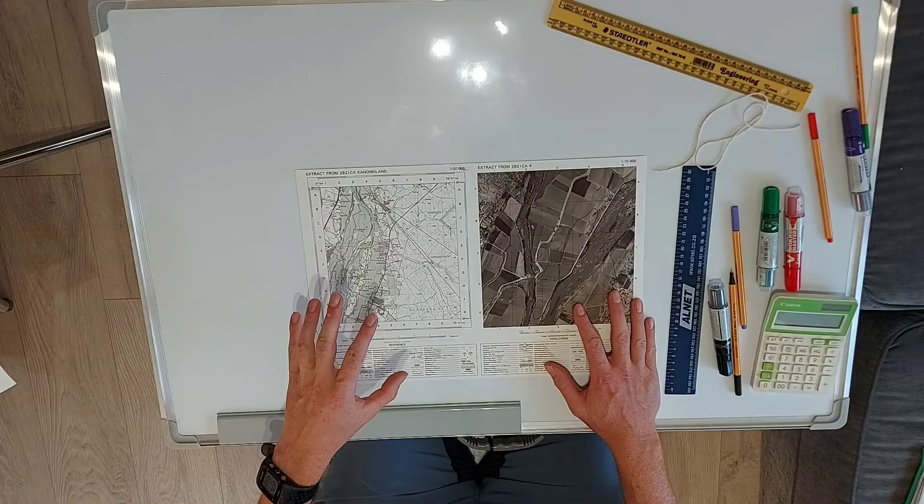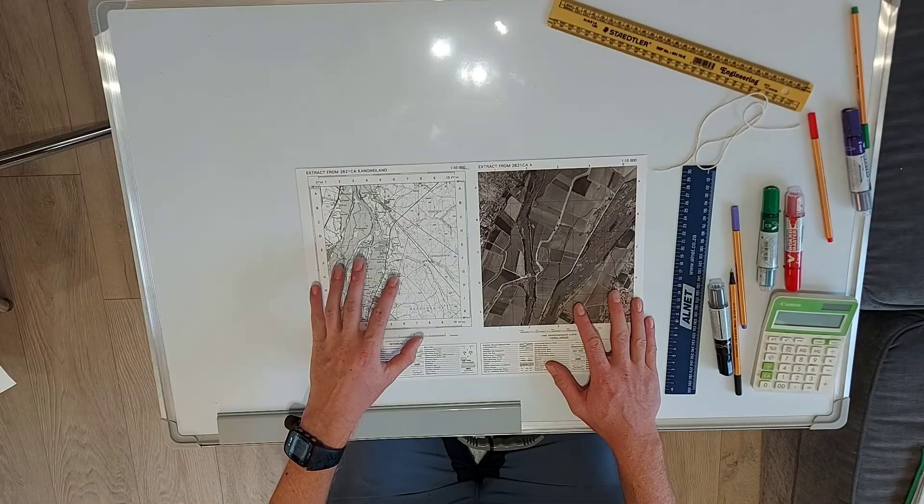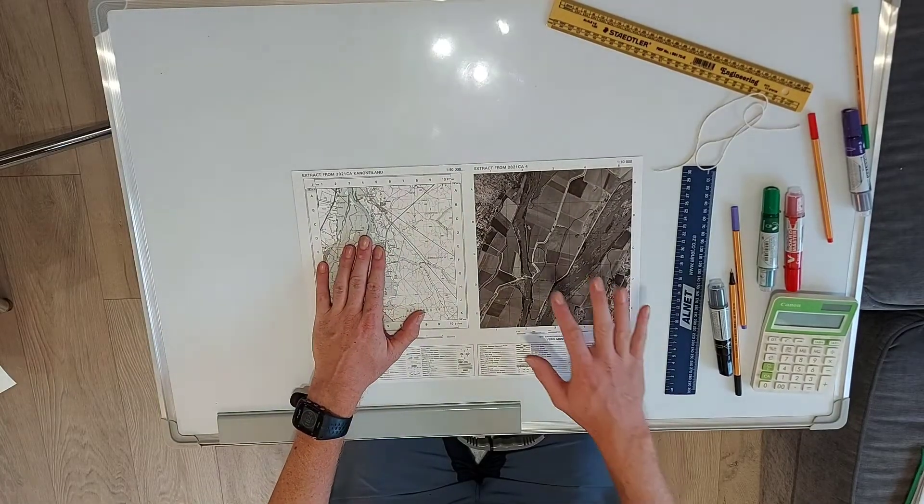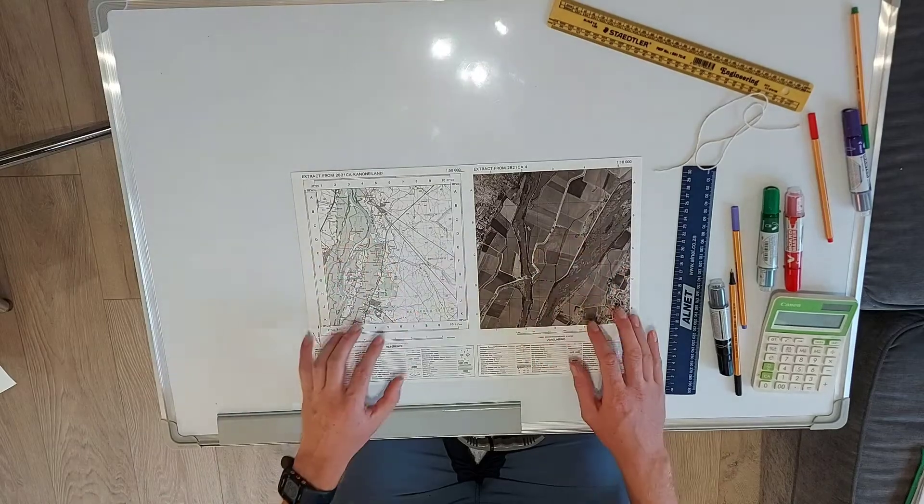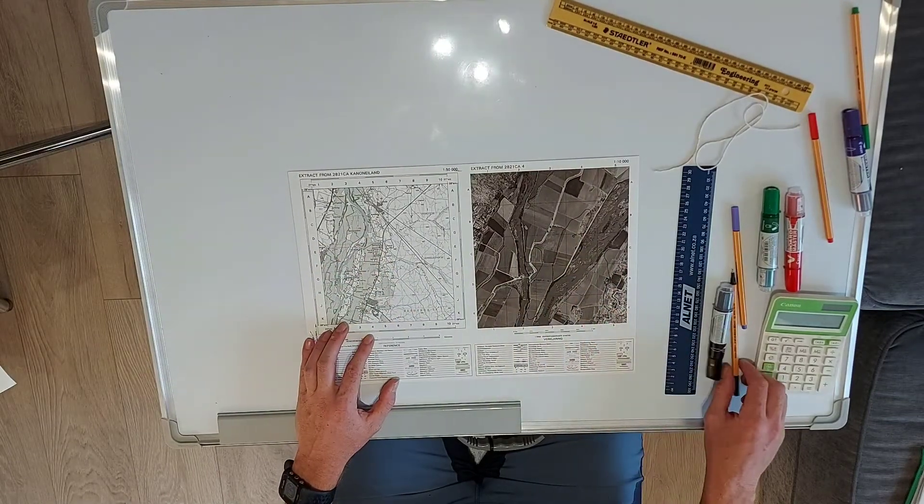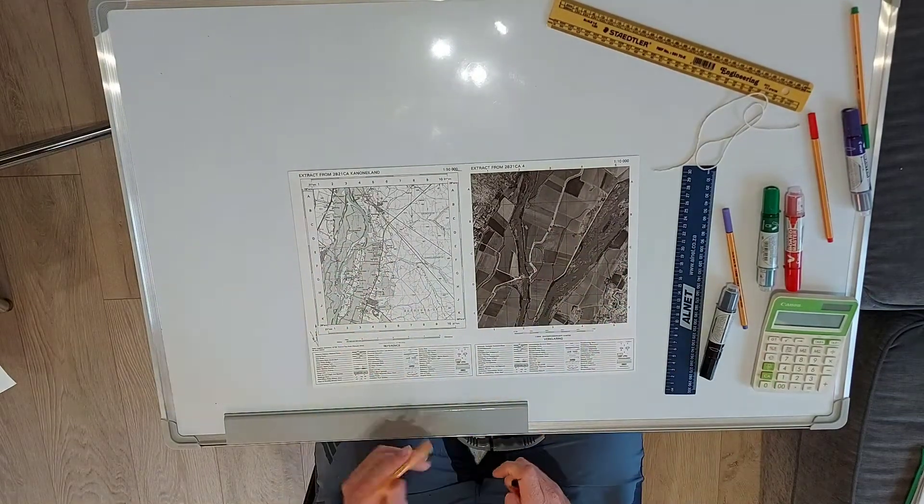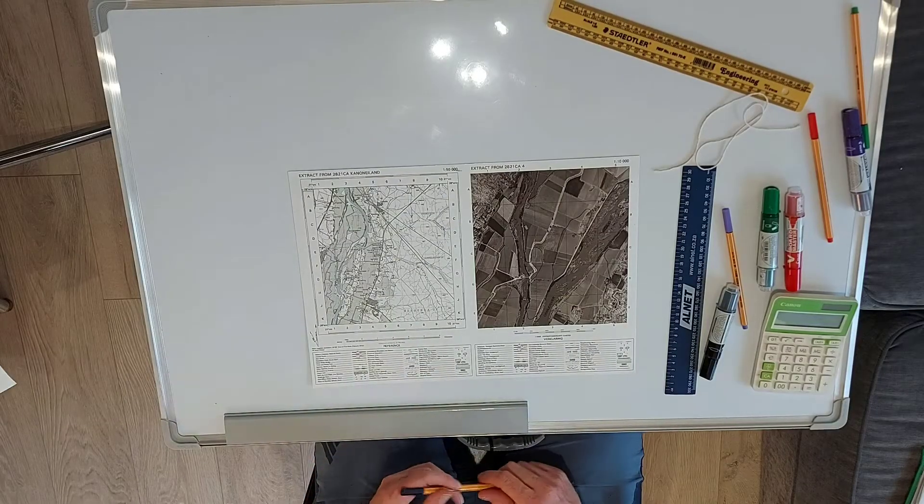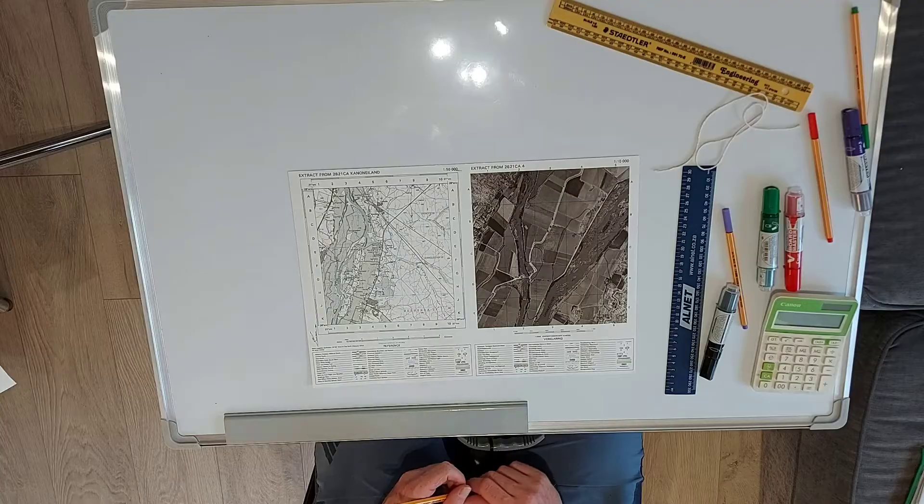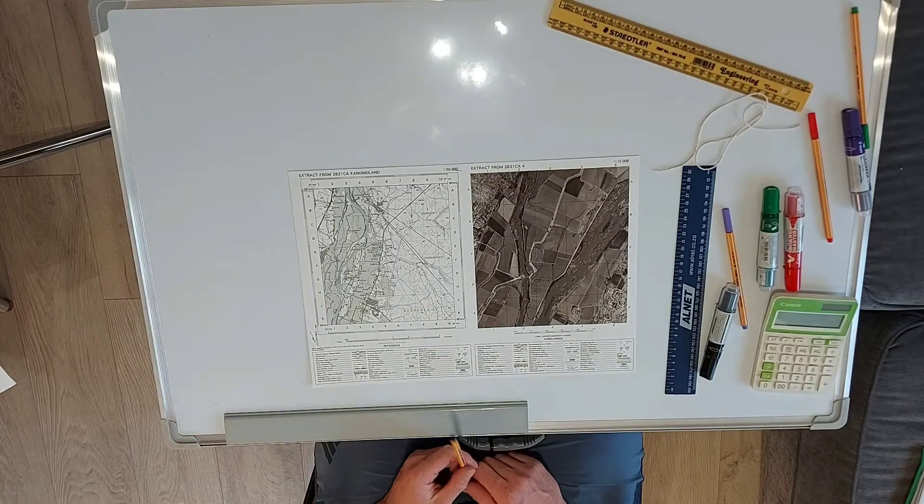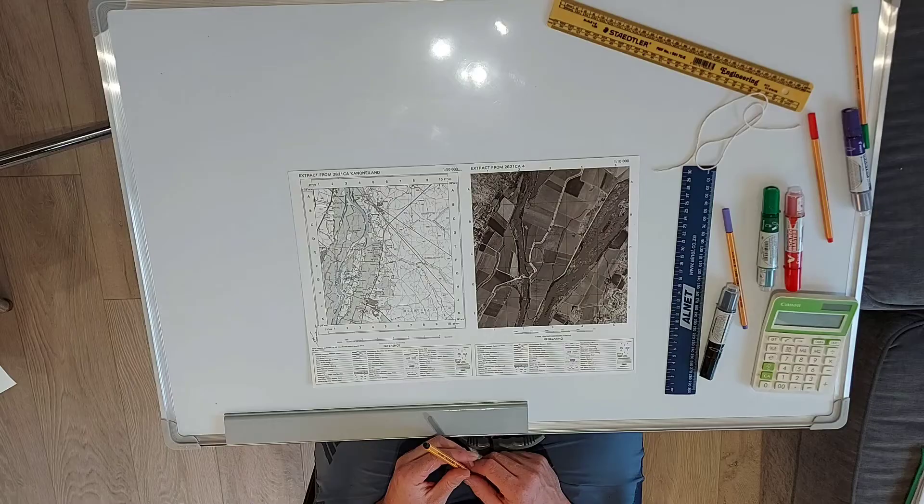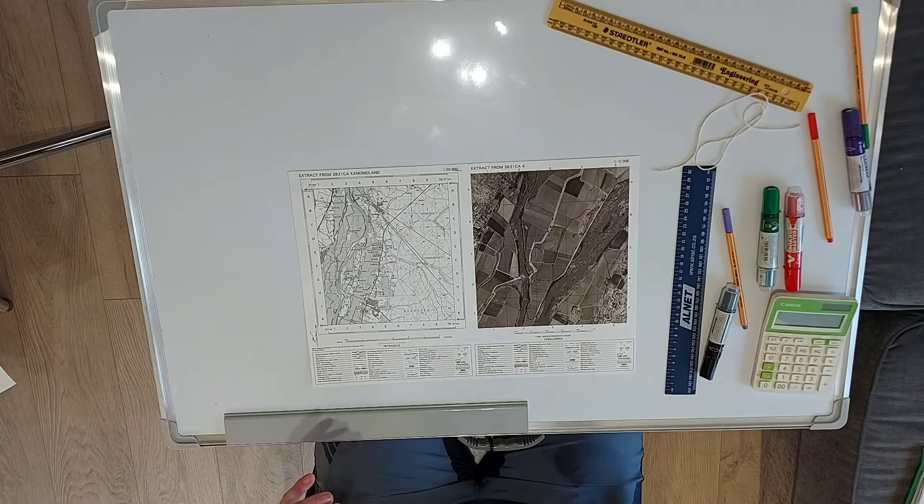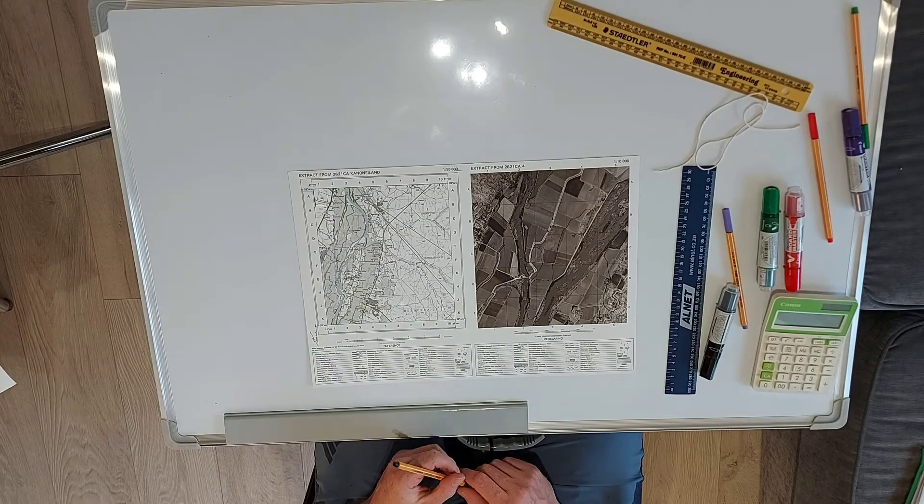So what I've got here is a similar map to what you guys will be receiving for your test. You'll notice that on the left-hand side we have the topographic map and on the right-hand side we've got our orthophoto map. Now there's various things that you will notice on these maps and I will go through them through different parts, but let's focus on part one on mapwork calculations.